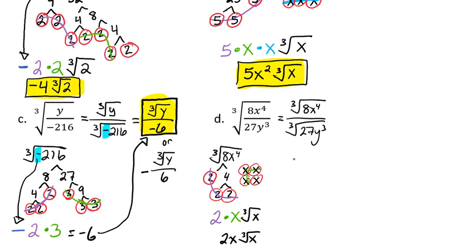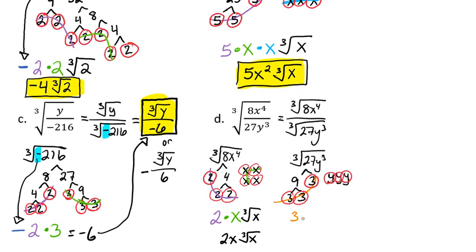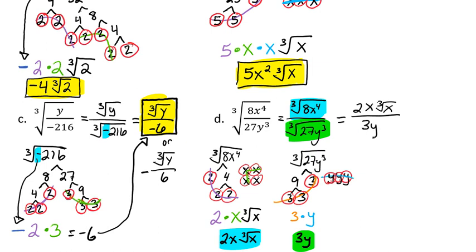Now we'll break down our denominator, the cubed root of 27y to the 3rd. 27 breaks down with a 9 and a 3, and 9 breaks down with a 3 and a 3. And we have 3 y's — since they've been broken down, they each get their own circle. Looking for groups of 3 — we see a group of three 3s, so the 3 comes out. And we have a group of three y's, so a y comes out. That gives us 3y for the denominator. Our numerator was 2x times the cubed root of x, and our denominator is 3y. That is our final answer, because nothing in the numerator or denominator can cancel out, and we're done.